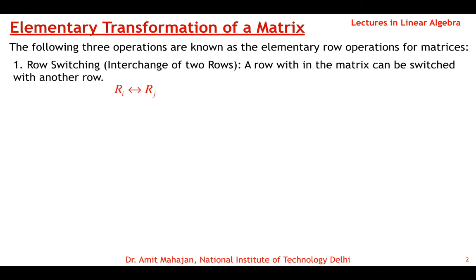The first operation is row switching, or interchange of two rows. A row within the matrix can be switched with another row. The operation says that Ri is interchanged with Rj — so the i-th row is interchanged with the j-th row. For example, in a 3×3 matrix you can interchange R1 with R3, and so on.